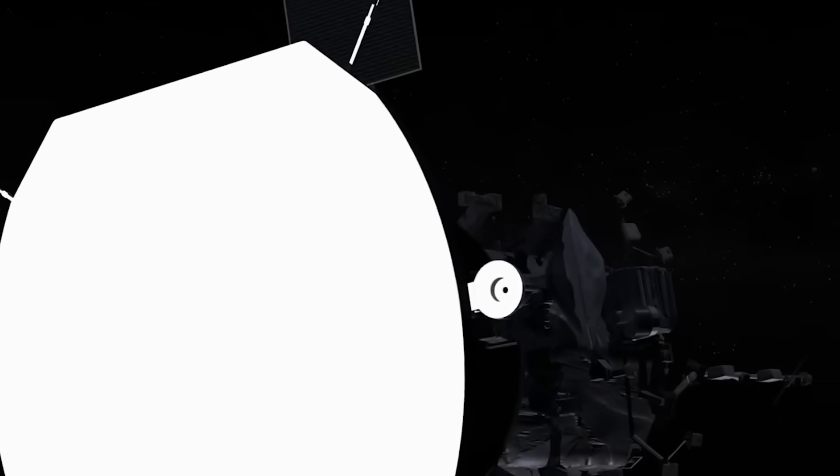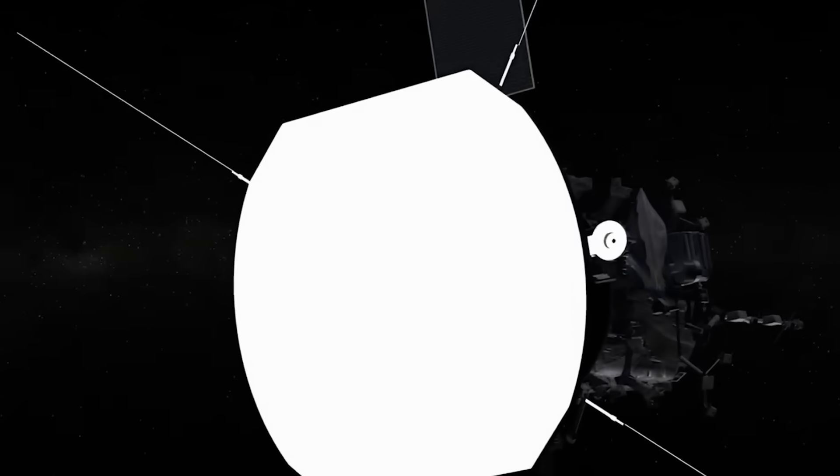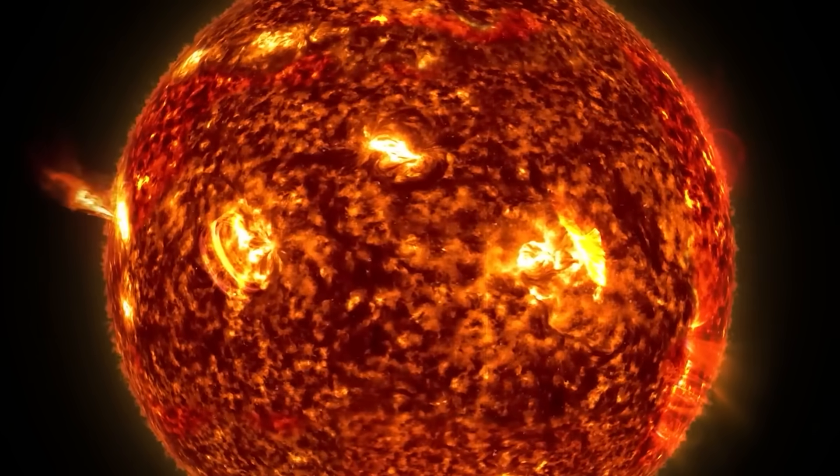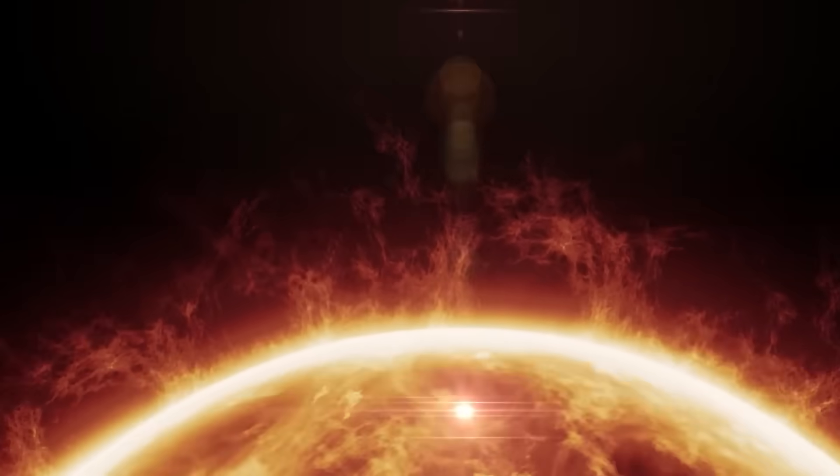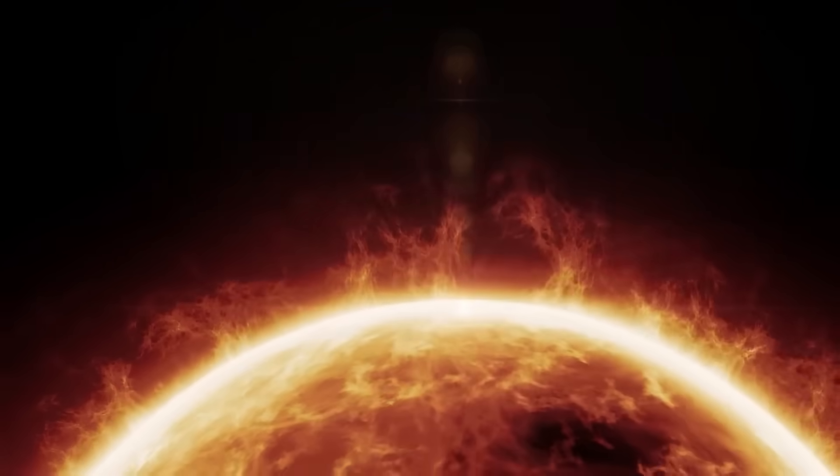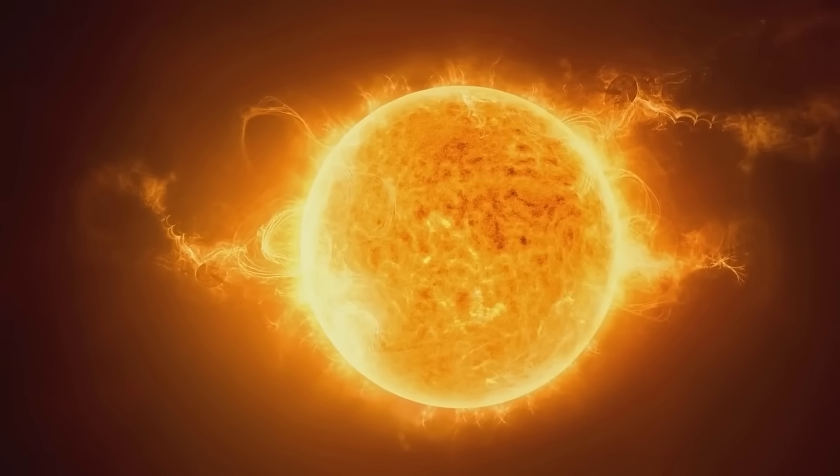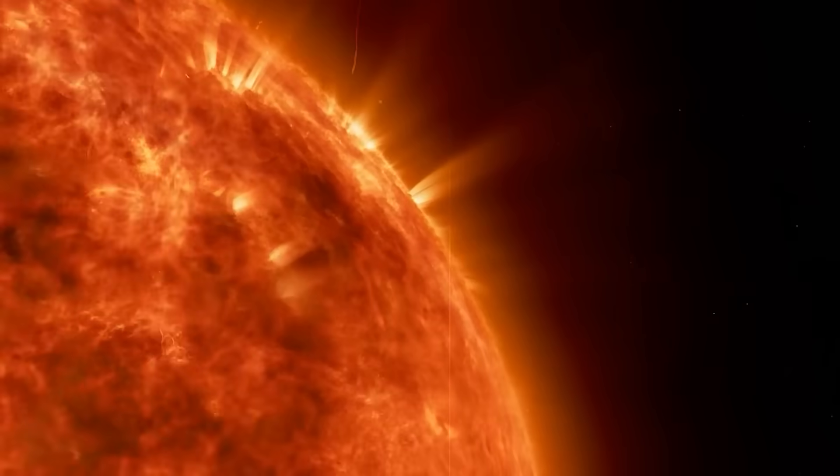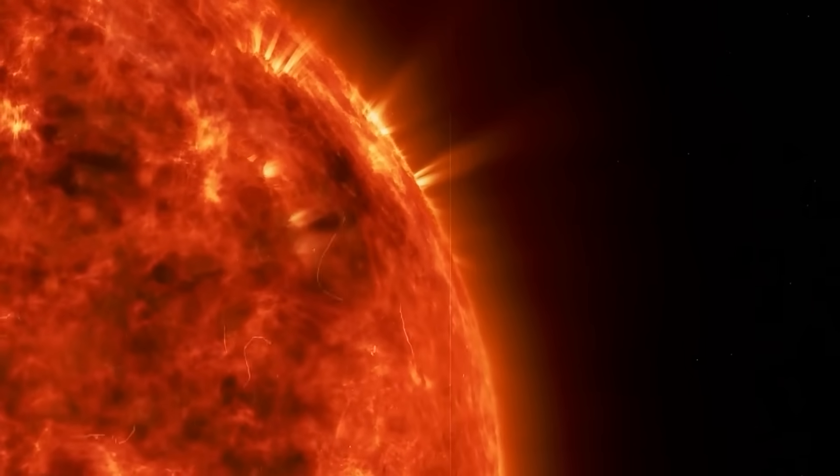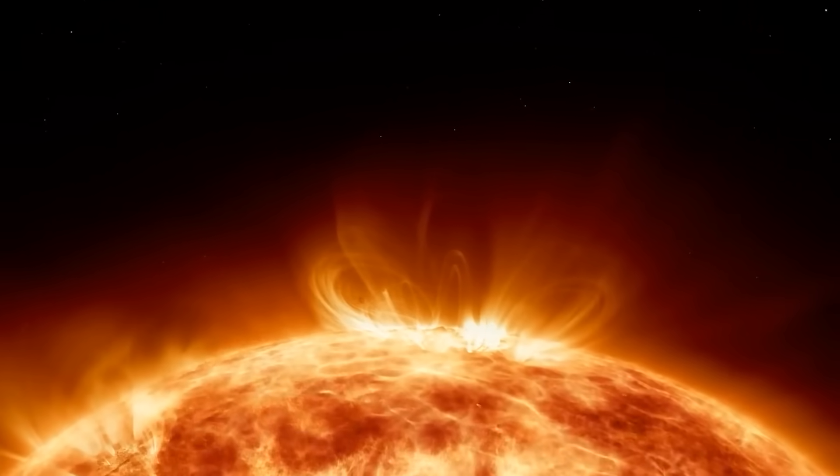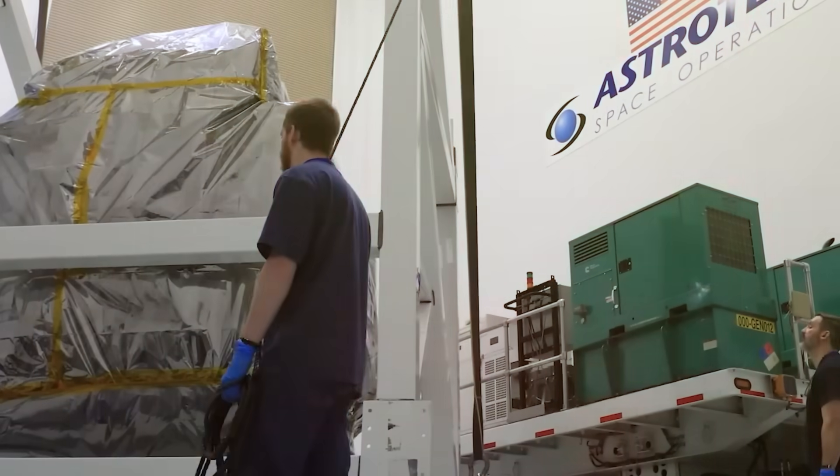The Parker Solar Probe has just uncovered unexpected solar activity that is forcing scientists to rethink everything they thought they knew about the sun, from strange magnetic waves to powerful bursts of invisible energy. These discoveries are reshaping our understanding of how the sun operates and how its unpredictable behavior could impact Earth. These findings could revolutionize solar storm predictions, improve space weather forecasting, and even change how we prepare for future space missions.